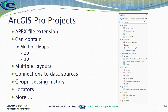One of the things ArcPro does differently from ArcMap and ArcCatalog is it makes use of projects. This harkens back to the days of ArcView 3.x software where we had those APR project files. ArcPro does the same thing — their projects have APRx file extensions. Each project can contain multiple maps, which can be 2D or 3D.